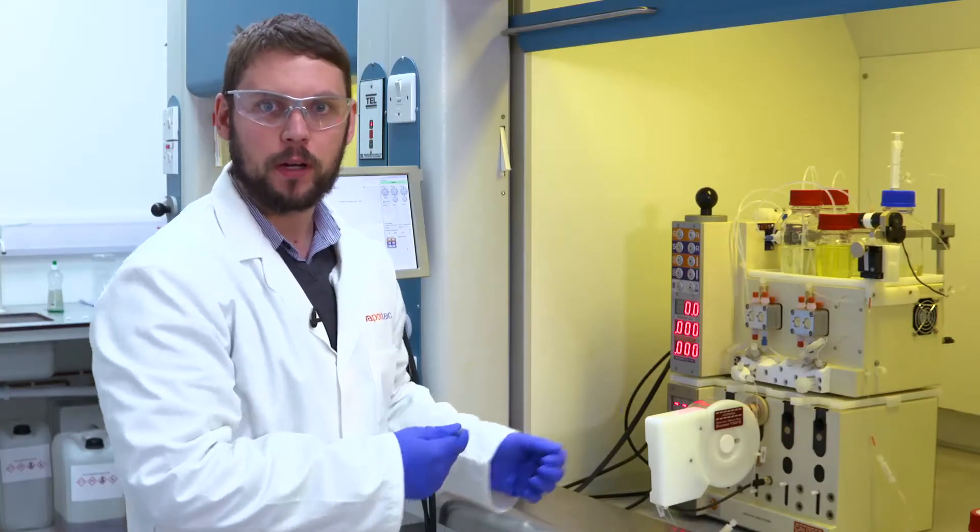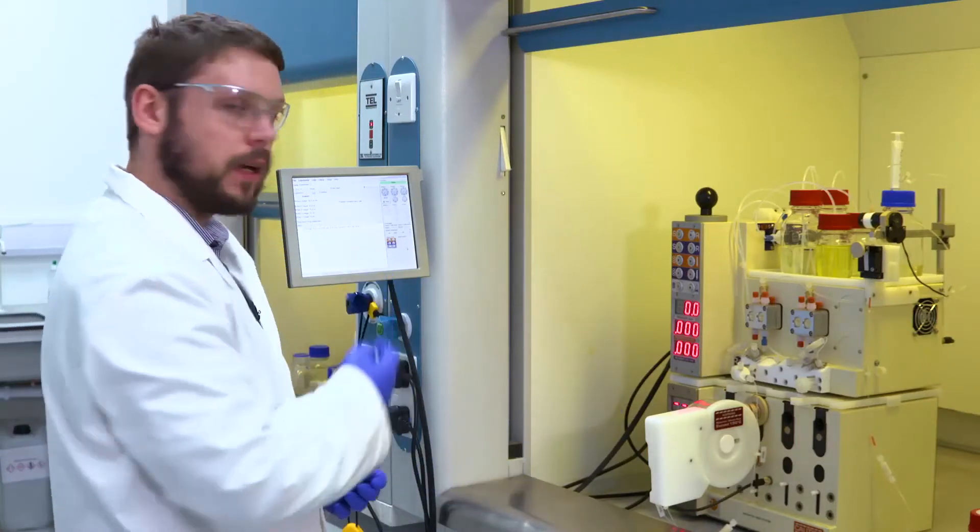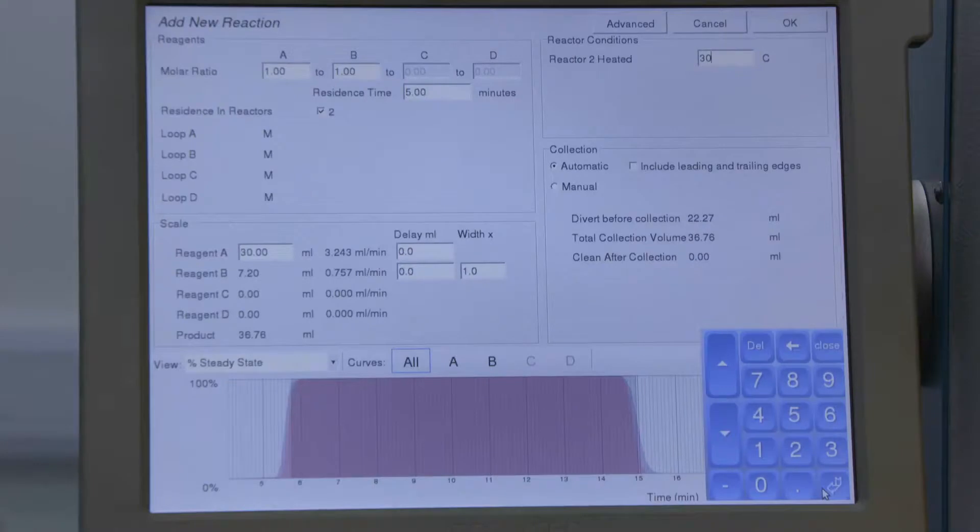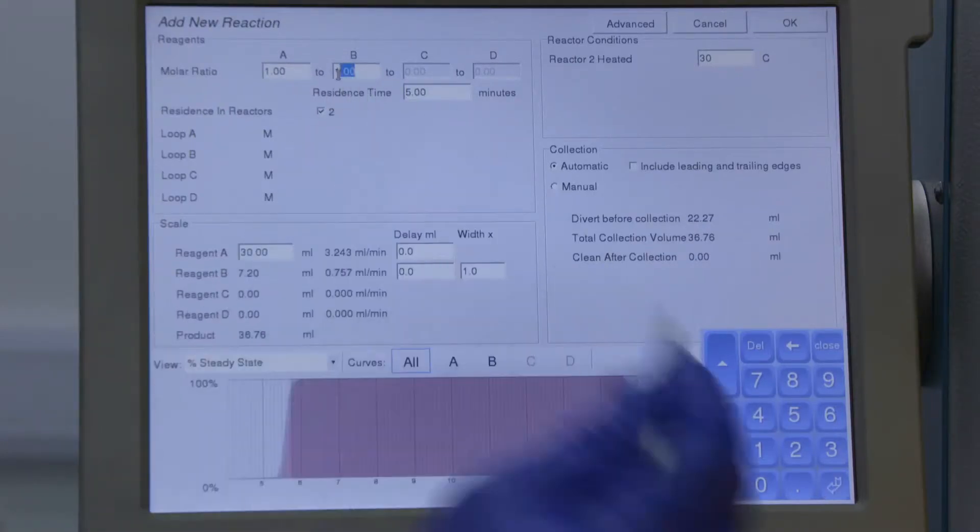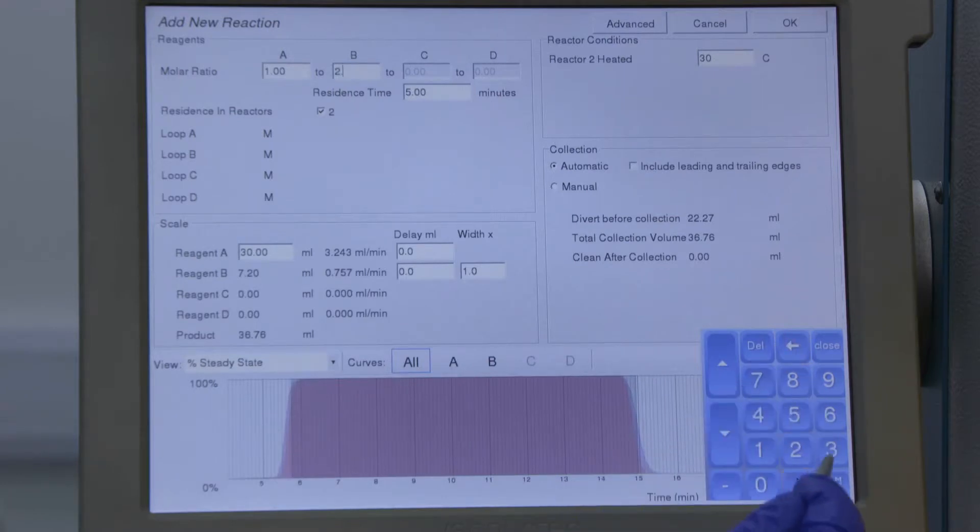So now I've got the system ready for the experiment. I need to actually program the experiment in FlowCommander. This screen allows me to design my experiment in more detail. So I can tell FlowCommander what molar ratios I want, what residence time I want inside the reactor.